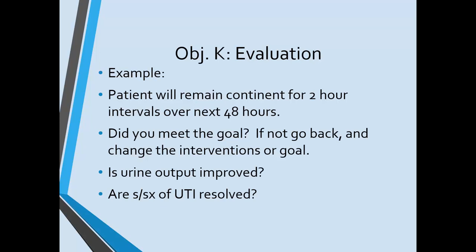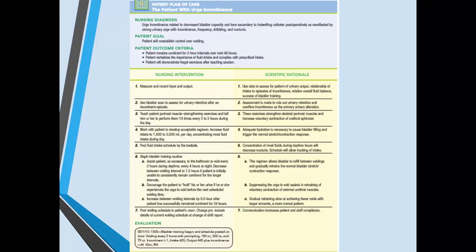Finally, we come to evaluation — evaluate the goals and nursing interventions for effectiveness, and change them as necessary if they are not met or only partially met. Review the example care plan from your Craven text for a properly written care plan for a patient with urge incontinence. This concludes the presentation on urinary elimination. Thanks for watching and have a great day.